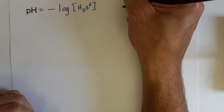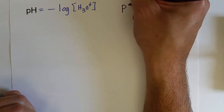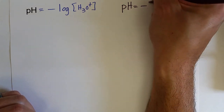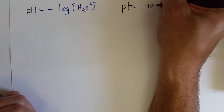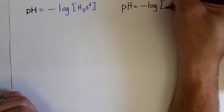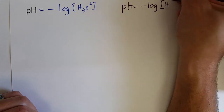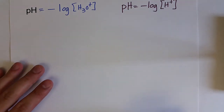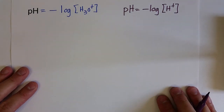pH is equal to the negative log of the hydronium ion concentration. We say hydronium, but we can also talk about this in terms of the H⁺ ion. You can use H⁺ and hydronium H₃O⁺ interchangeably — these two equations are both saying the same thing.